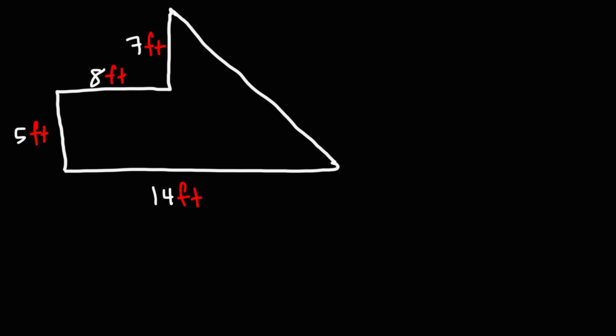Now let's work on this example. I'm going to draw a line right here to make it into a rectangle and a triangle. For the rectangle, we have a length of 8 and a width of 5, so 8 times 5 gives us an area of 40 square feet.